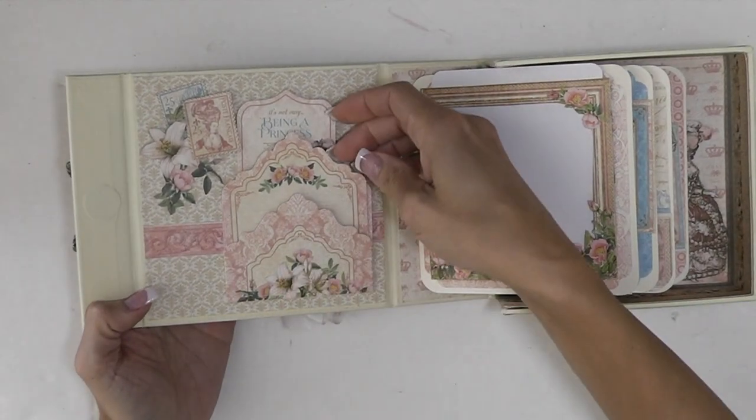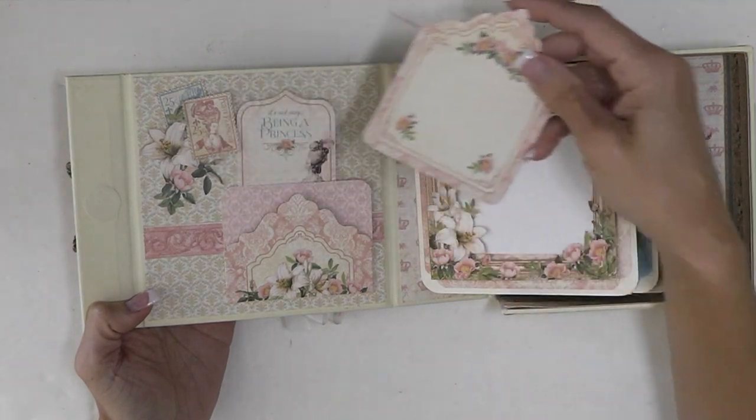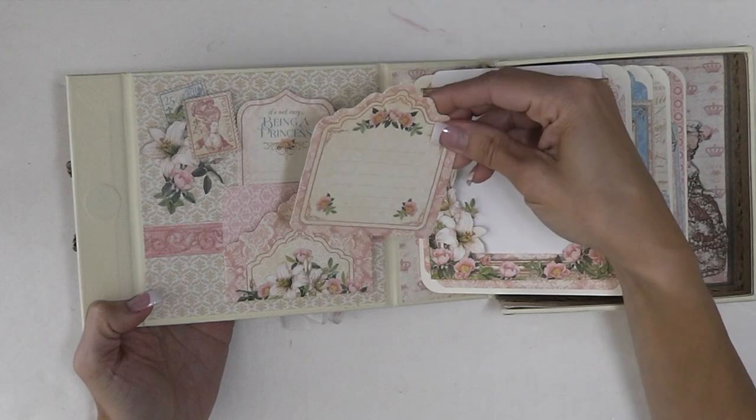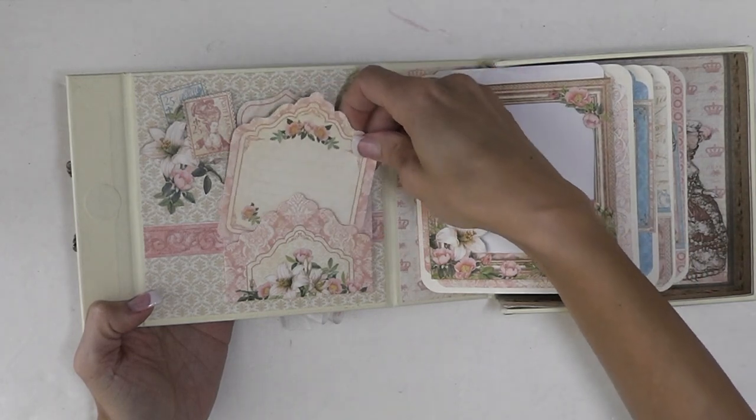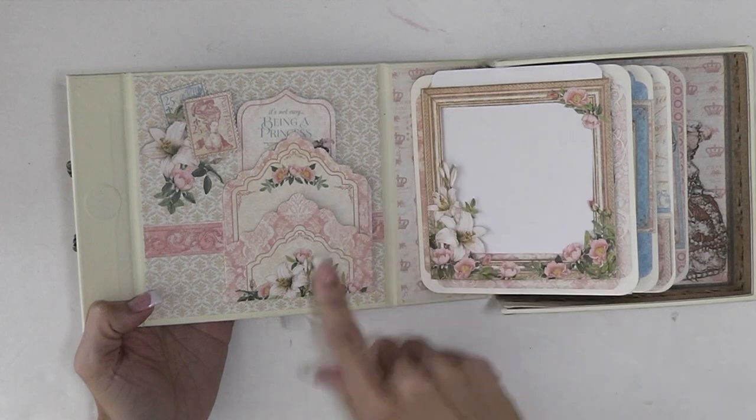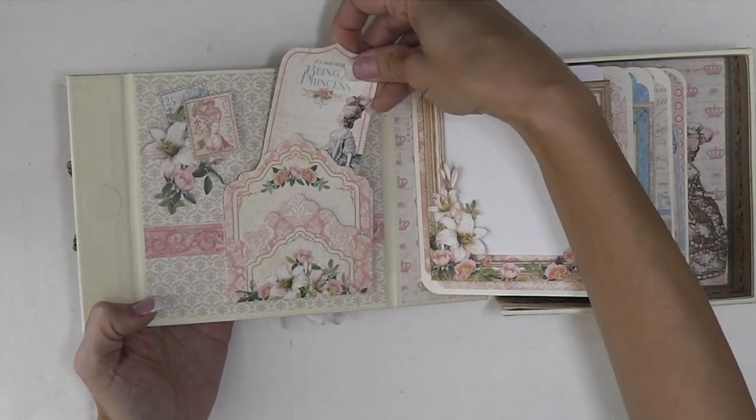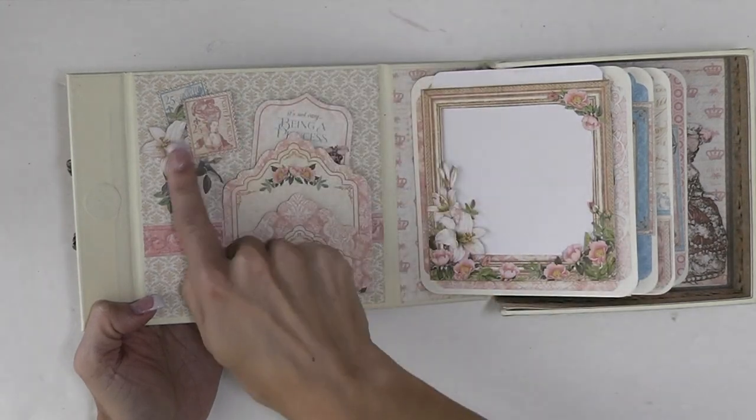And then we have our mini album inside. And then I use the pockets and tags from the collection. This is my first time using these from Graphic 45 and I really love them. They're already made tags for you with their little corresponding envelopes. Added another tag behind here.